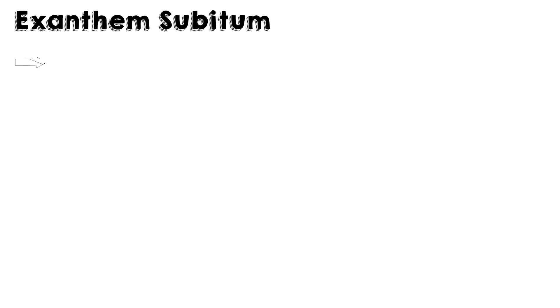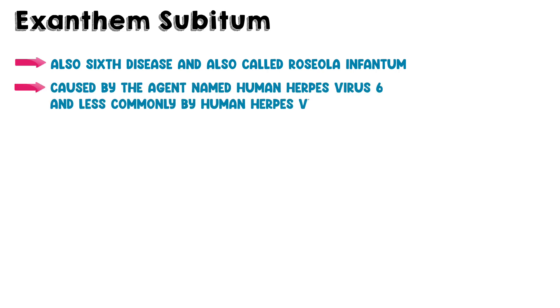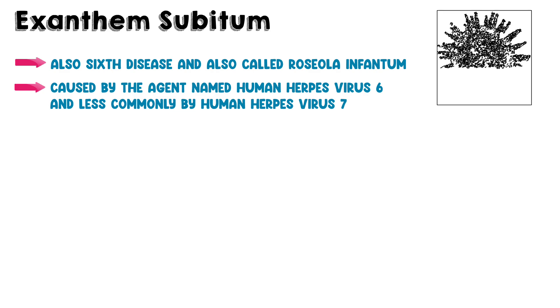Hello and welcome. Today we are going to learn about another viral infection known as Axanthum Subutum. Axanthum Subutum is known as 6th disease and it is also called Roseola Infantum. It is caused by the agent named human herpes virus 6 and less commonly by human herpes virus 7.